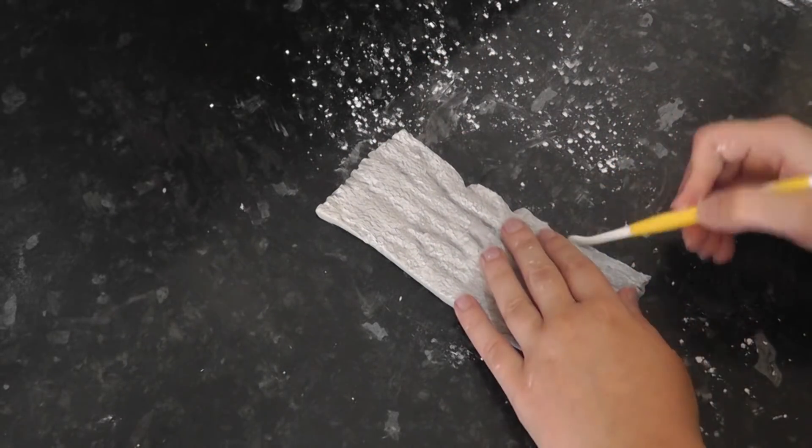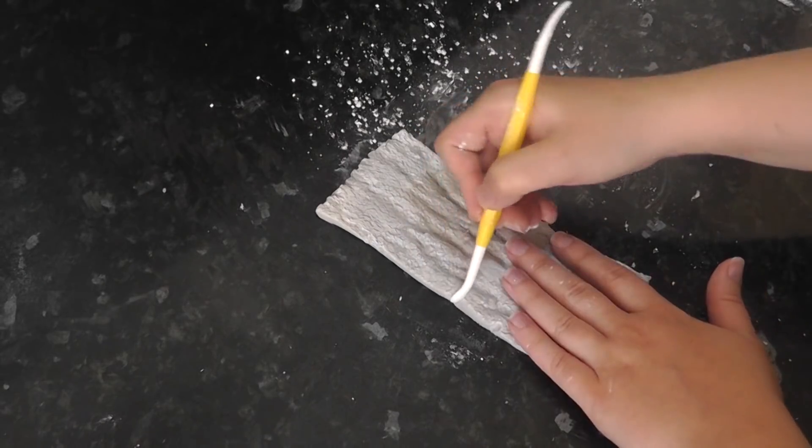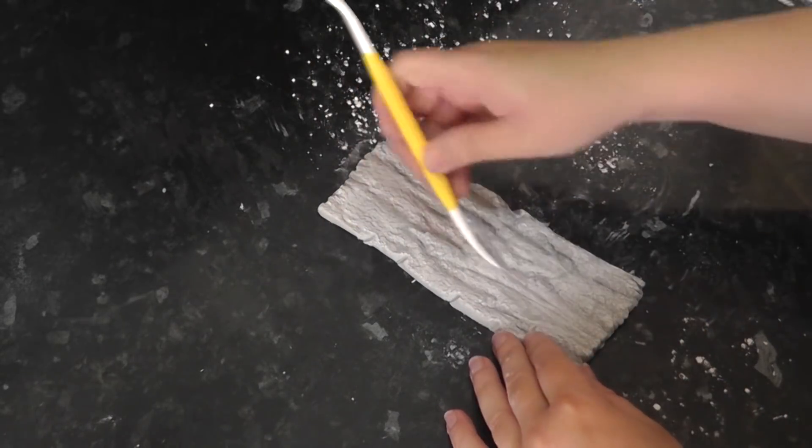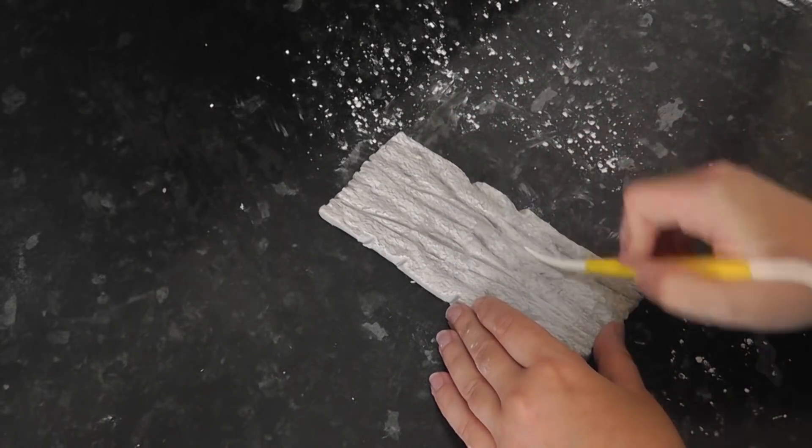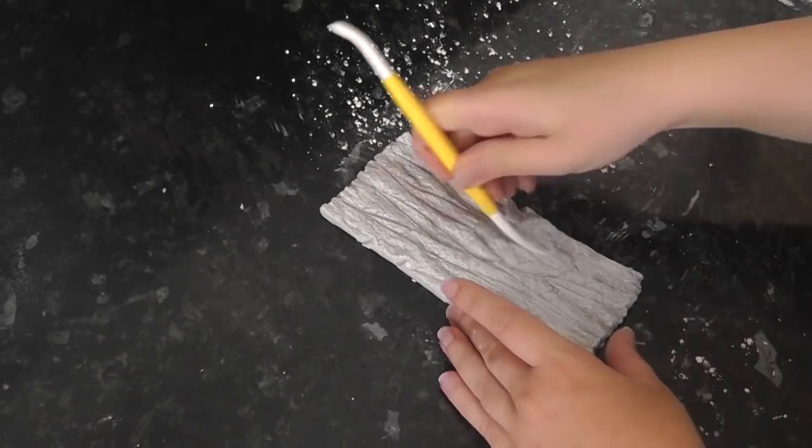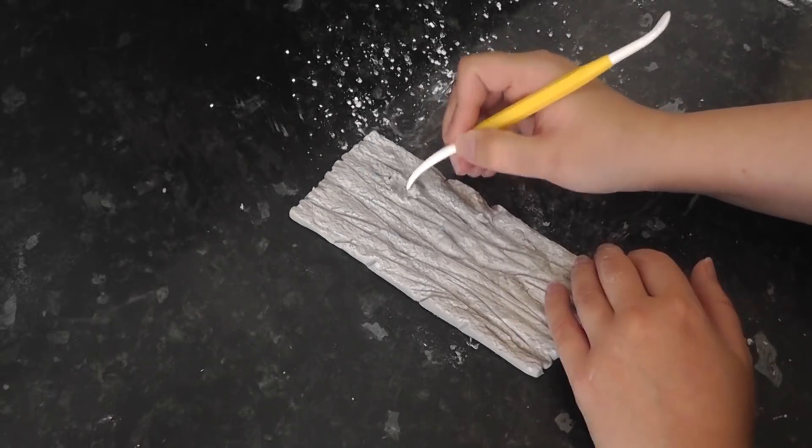Distressed wood isn't going to have tidy sides, so attack those too. Add in some deeper lines and cracks with the dresden tool. You can create holes by digging into the paste.